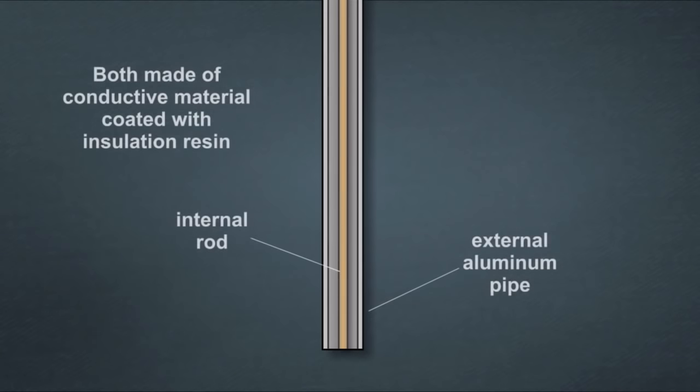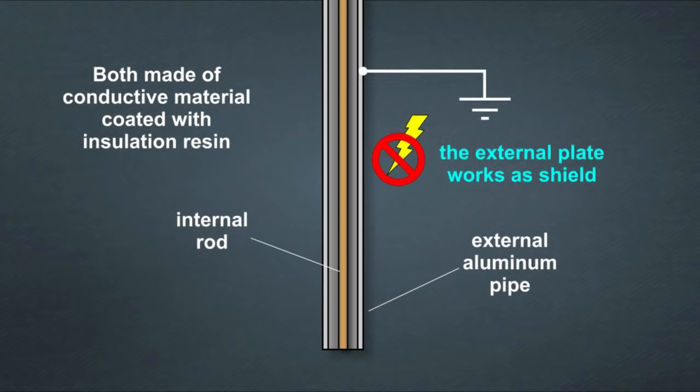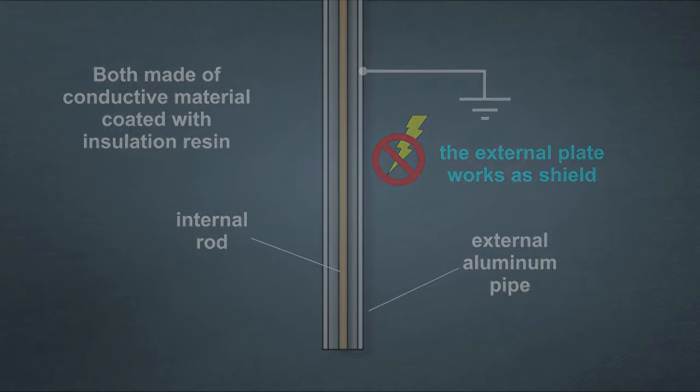A better design would have been to use an aluminum pipe, also connected to ground, and an inner rod to form the outer plate of a coaxial capacitor. The external aluminum plate would work as a shield from induced electric fields, making the oscillation more stable.